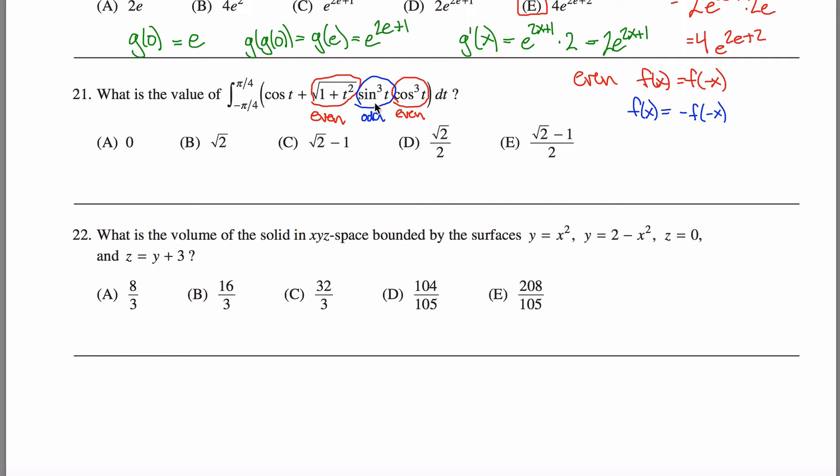Sine to the third. Sine is an odd function, therefore sine to the third power is also an odd function. And as I think I already mentioned, cosine is an even function here.